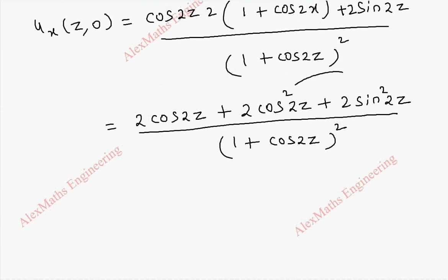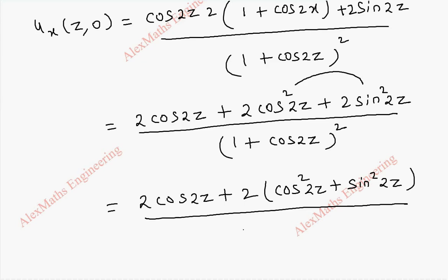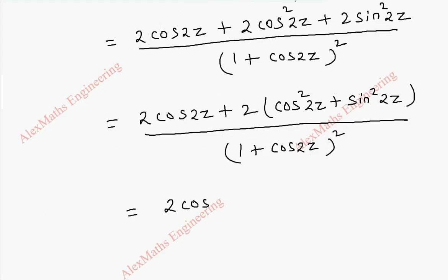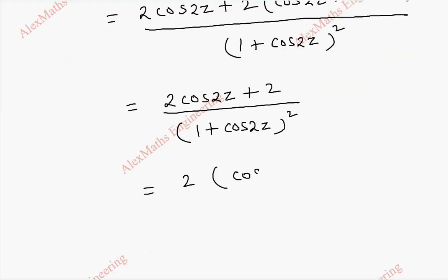Now taking 2 common, this becomes 1 term is 2 into cos 2z plus 2 into cos square 2z plus sin square 2z whole division 1 plus cos 2z whole square. And this becomes 1. So numerator is 2 cos 2z plus 2 whole division 1 plus cos 2z whole square. Now 2 is taken common, we get in the numerator cos 2z plus 1 whole division 1 plus cos 2z whole square.